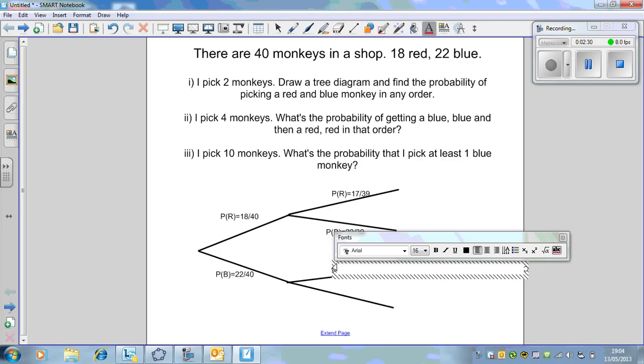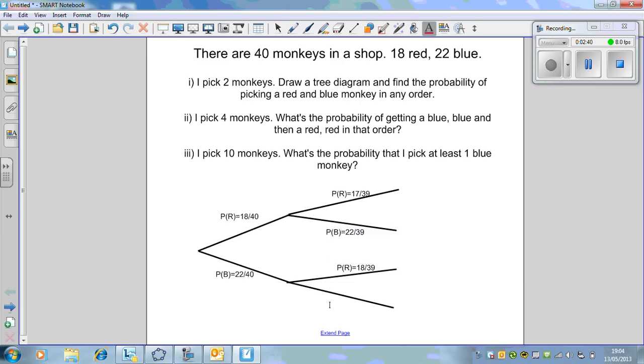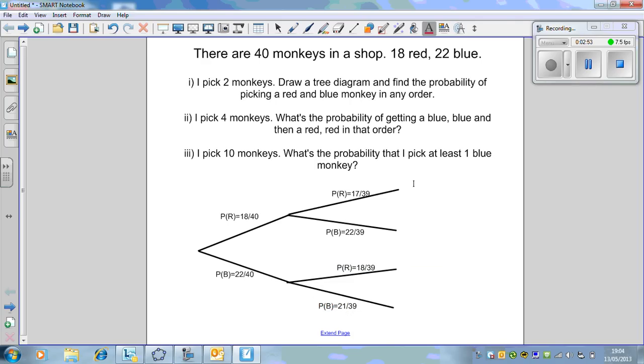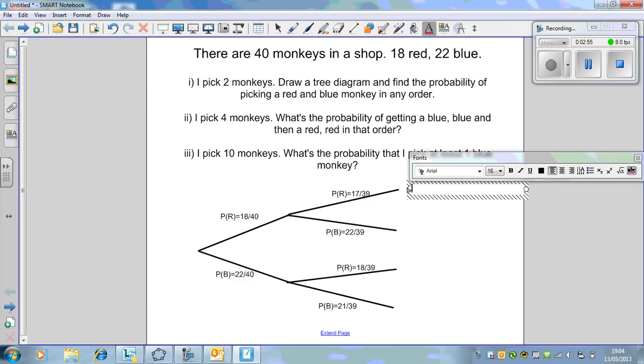This is the universe where we picked a red first. These branches represent the universe where we picked a blue first. Probability of a red now, we've already taken one out, so there's only 39 to deal with.